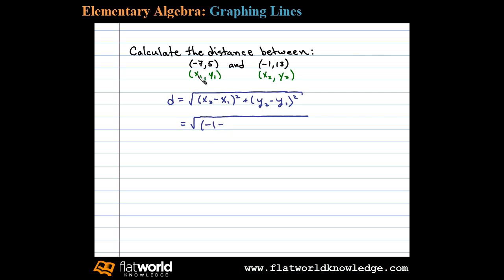In this case, we have x2, which is negative 1, minus x1, negative 7, and then we'll have to square that, plus y2, 13, minus y1, which is 5, and then we'll square that. Simplifying, we have the square root...